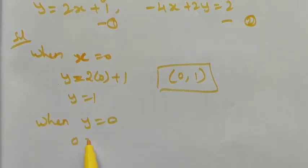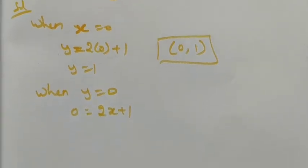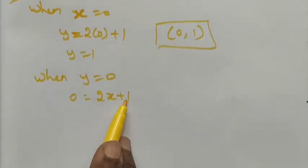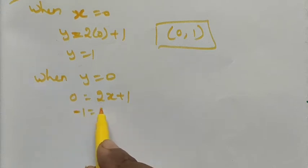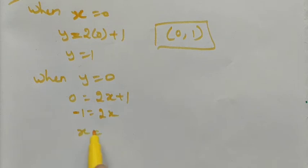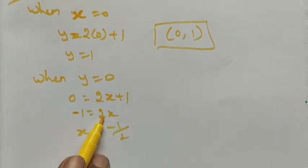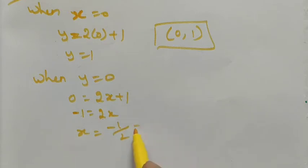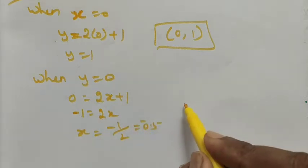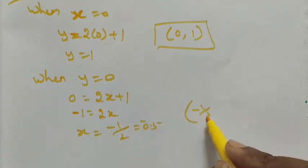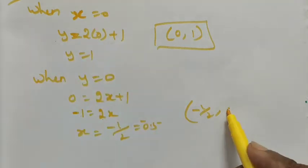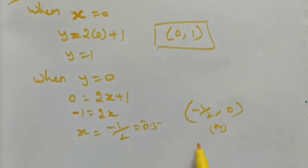Now when y is equal to 0, I put 0 in place of y: 0 equals 2x plus 1. Taking 1 to the other side, we get minus 1 equals 2x, so x is equal to minus 1 divided by 2, which is minus 0.5. The ordered pair is (minus 0.5, 0), which can also be written as (minus 1/2, 0).